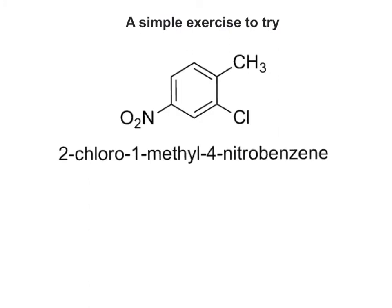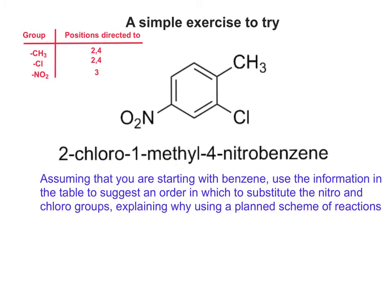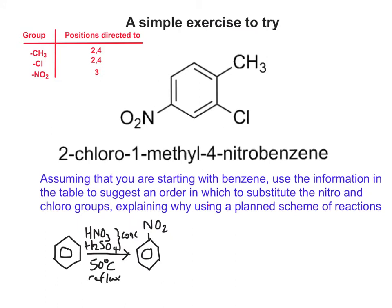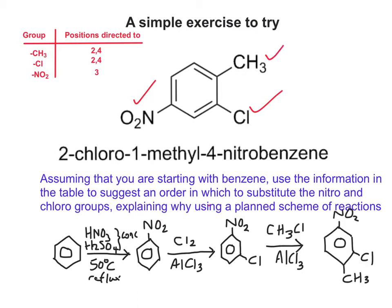Let's put an earlier molecule into context. Starting with benzene, use the information in the table to suggest an order in which to substitute the nitro and chloro groups. Starting with nitrobenzene as the first substituent - the nitro group is 3-directing, so the next step is to chlorinate it, placing those two substituents in the correct orientation. Then the chloro group is also 2,4-directing, so it directs the methyl group to the equivalent position next to it, placing all three substituents in the right orientation.